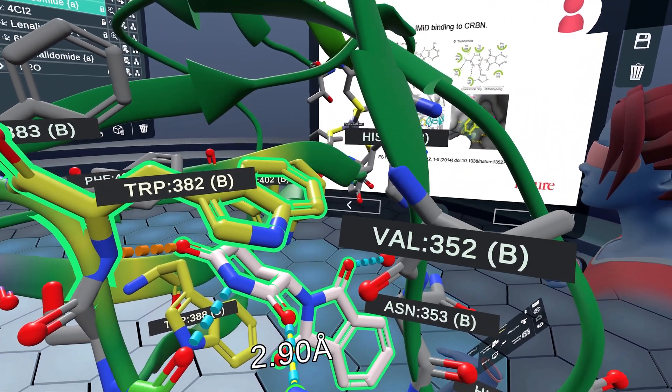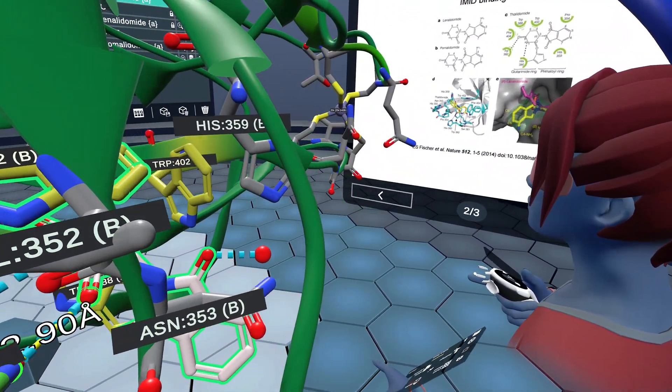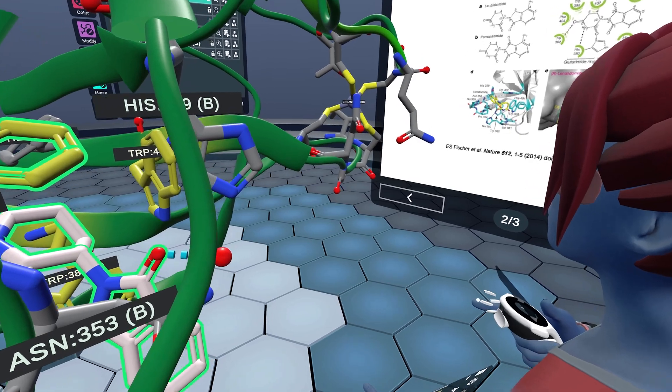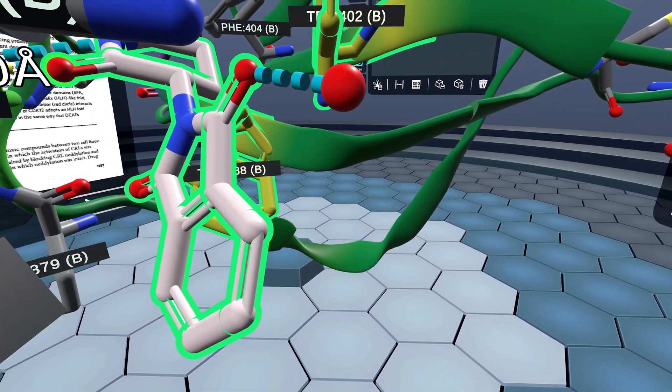The hydrophobic side of the glutaramide sits in a pocket formed by tryptophan 382, tryptophan 388, and tryptophan 402, also known as the tri-tryptophan pocket.